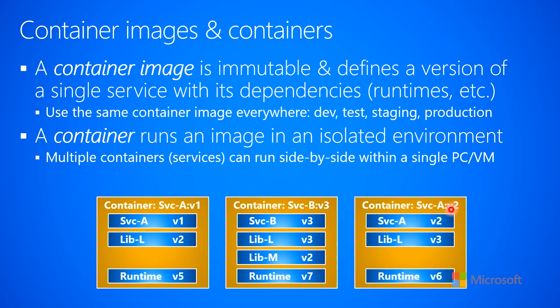We might also create Service A version two as another image. With v2 code, we've upgraded to version three of the library, whereas version one of the service used version two. We've also upgraded the runtime to version six, as opposed to version five before. So we now have three different container images, each self-contained with their own execution code, libraries, and runtimes inside them.